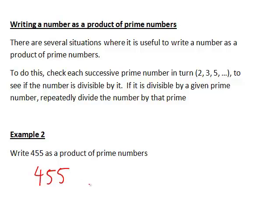The next prime number to consider is 3. Is it divisible by 3? Not immediately obvious, so let's add up the digits. 4 plus 5 plus 5 equals 14.